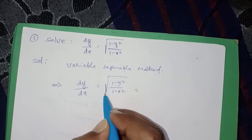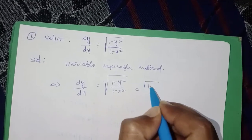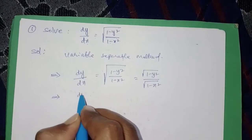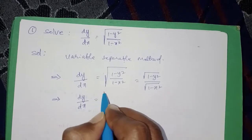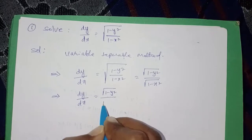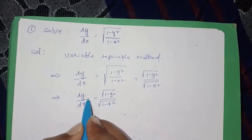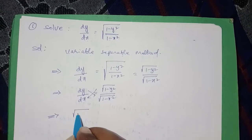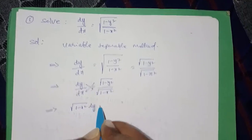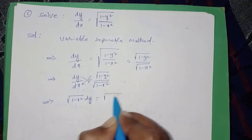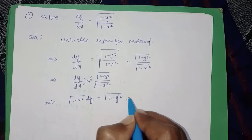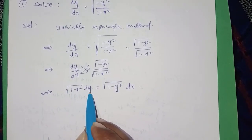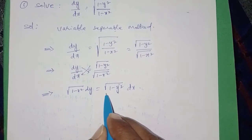Separate the root values: root (1 minus y square) upon root (1 minus x square) equals dy/dx. Now cross multiply — under root (1 minus x square) into dy equals under root (1 minus y square) into dx. Observe that x square and y are different variables.